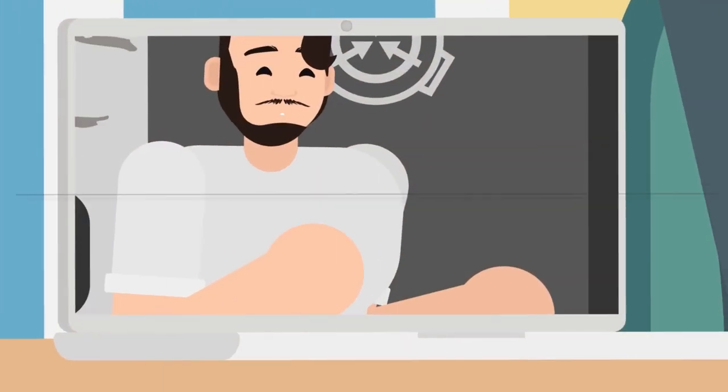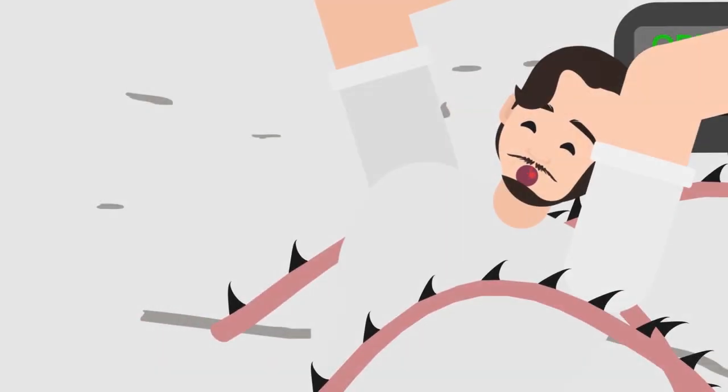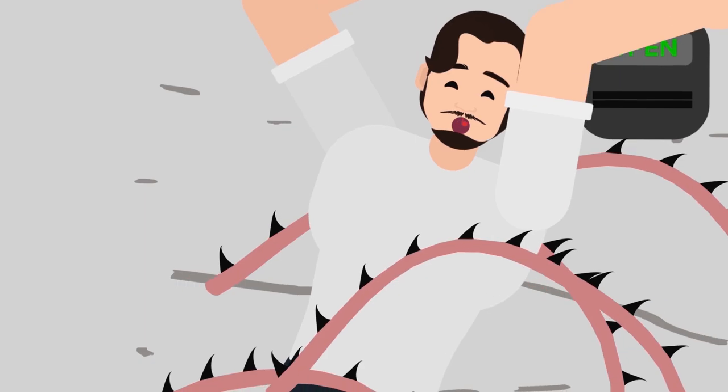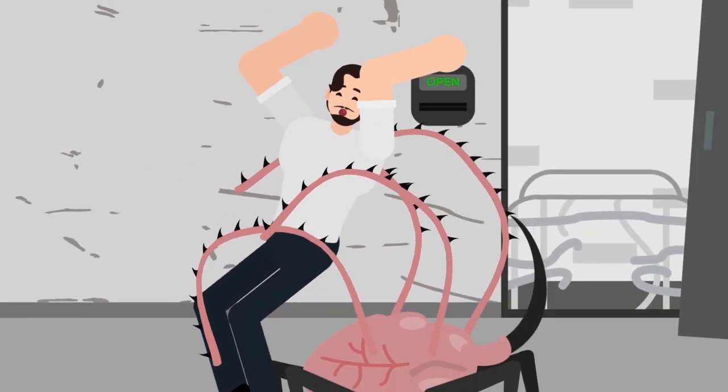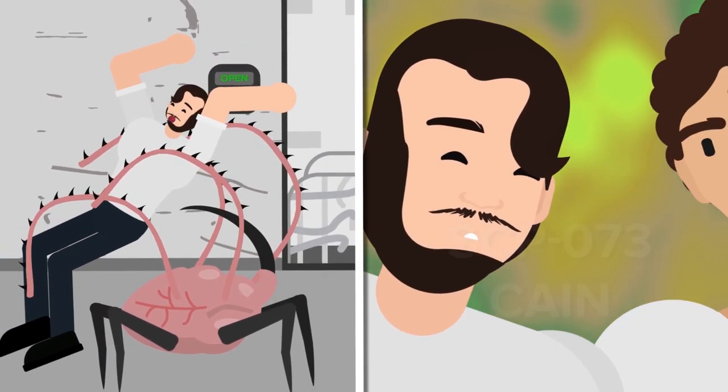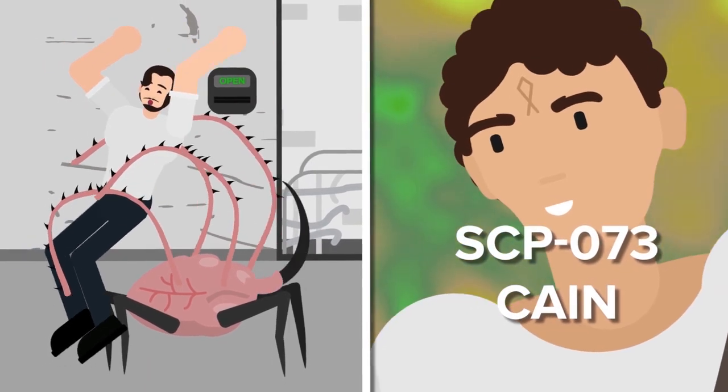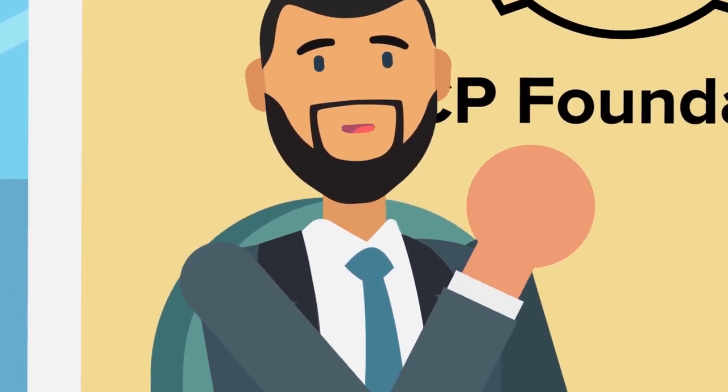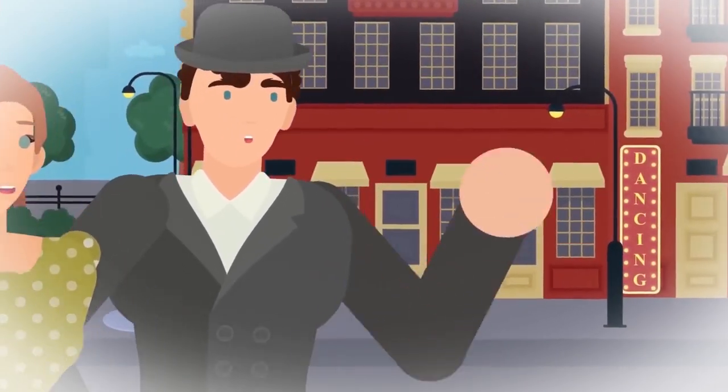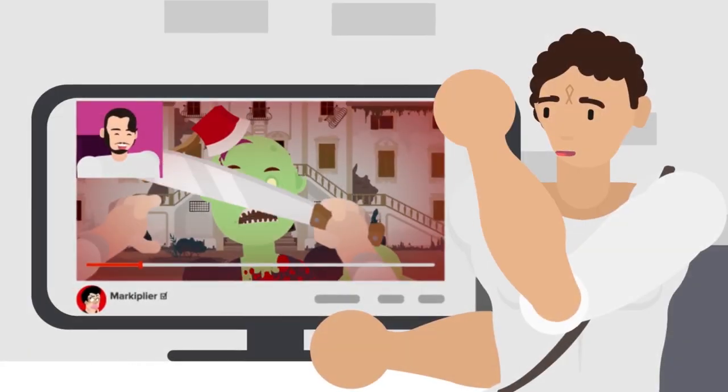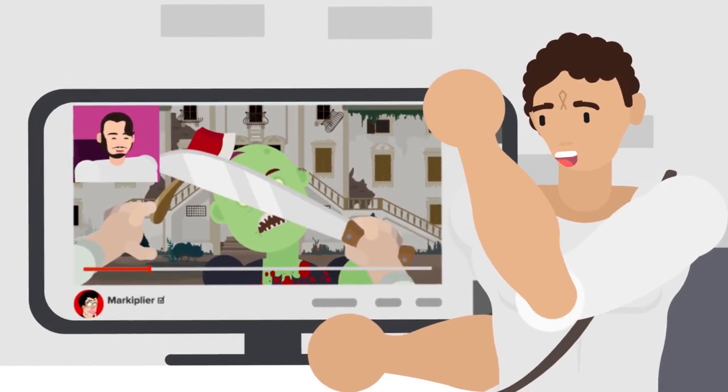But there are friendly anomalies that Markiplier might stumble upon, too. Suppose, instead of suffering an untimely end at the tentacles of a heart monster that speaks in creepy, atmospheric gibberish, he found himself face to face with SCP-073, Kane. It would be a nice reprieve, to be sure, as Kane is generally pleasant and congenial to any humans he meets. You never know, he might even be a fan of Mark's work.